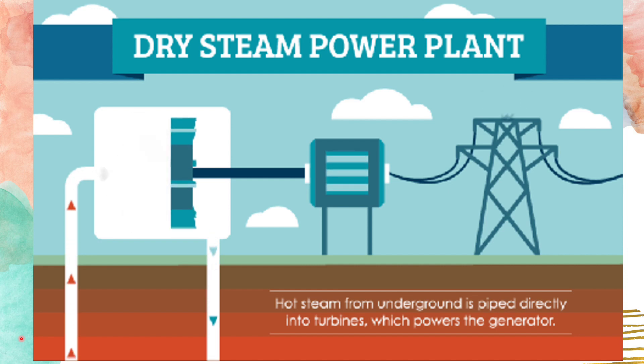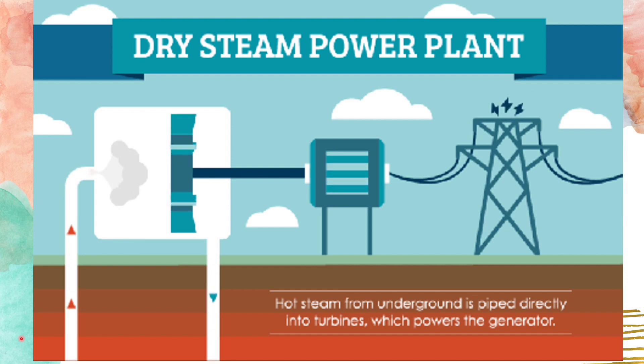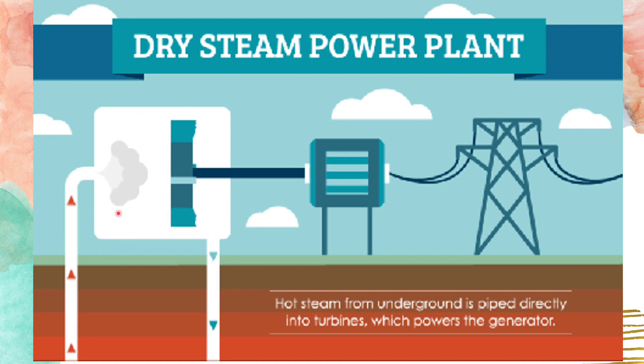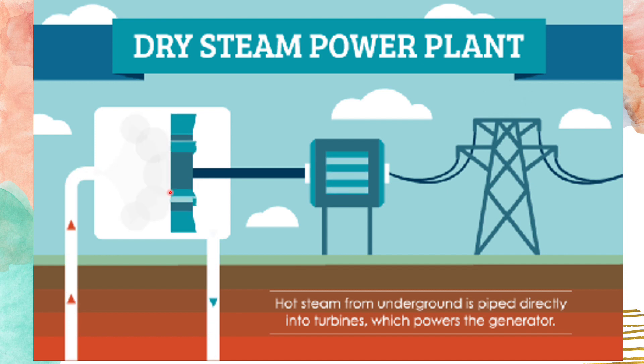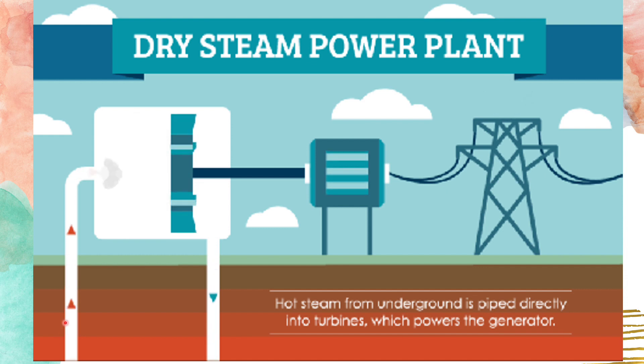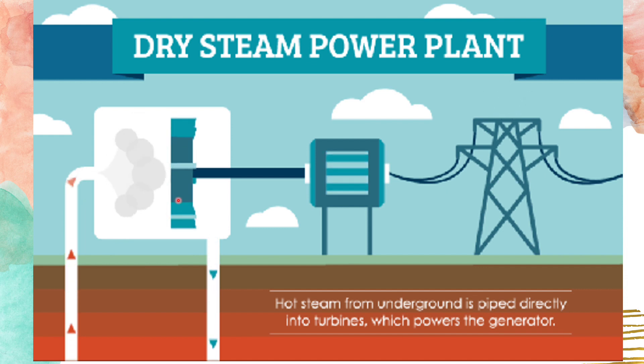The different types of geothermal power plants have different ways of utilizing the heat of the Earth in order to produce electricity. Let's start with the dry steam power plants. The dry steam power plant needs three important factors in order to produce electricity: steam, turbines, and a generator. The hot steam from underground is piped directly into the turbines, which powers the generator.